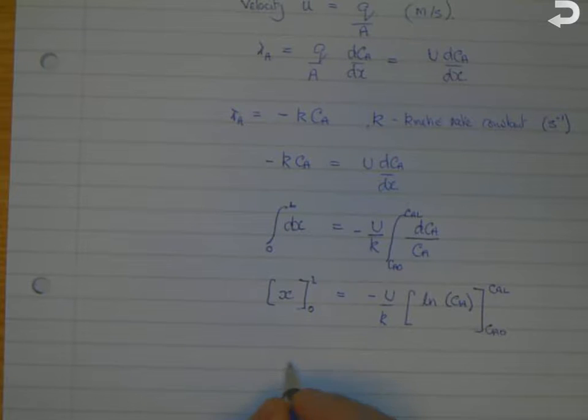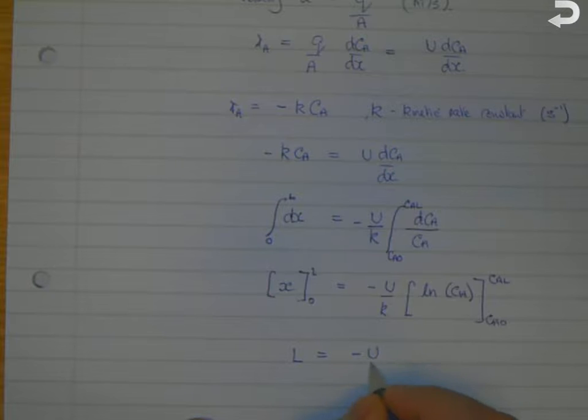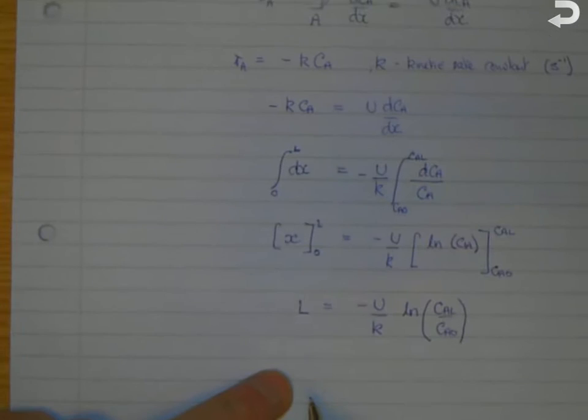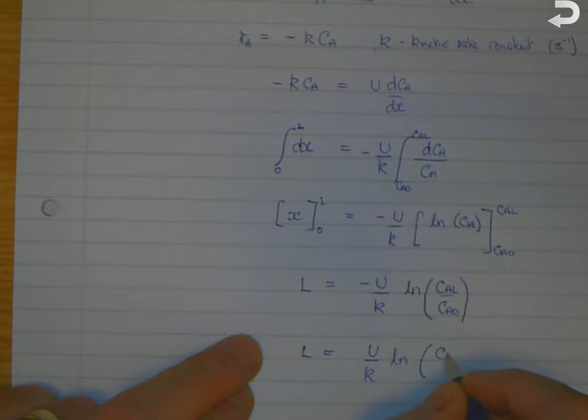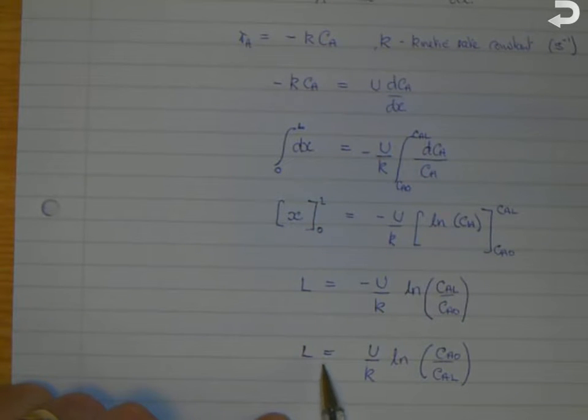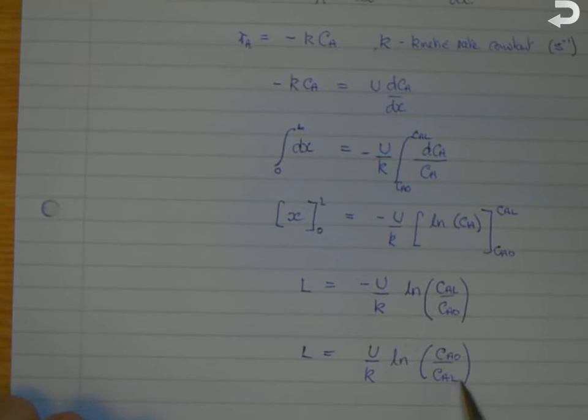And that gives us that L is equal to minus u over K log C_A L over C_A naught. And we can then get rid of the minus sign and say that L is equal to u over K and log C_A naught over C_A L. And that gives us the length of the tubular flow reactor, plug flow reactor in this case, as a function of the velocity, the first-order kinetic rate constant, and the required inlet and outlet concentrations of our starting material.